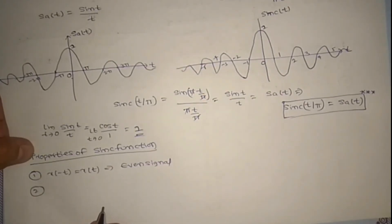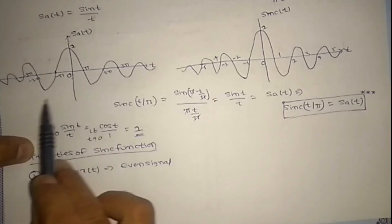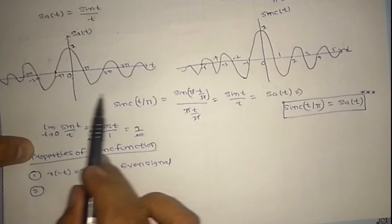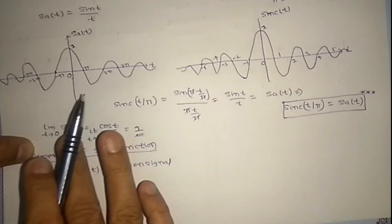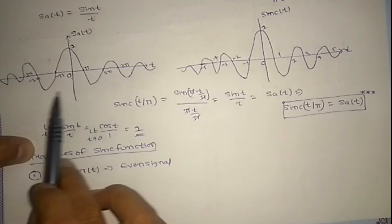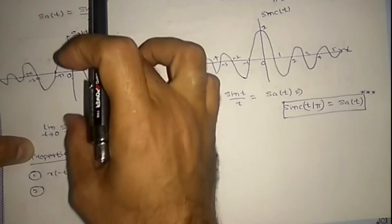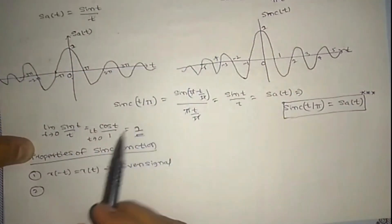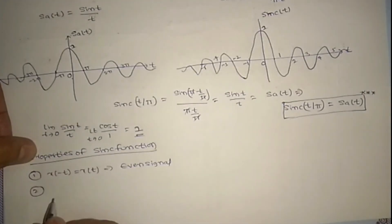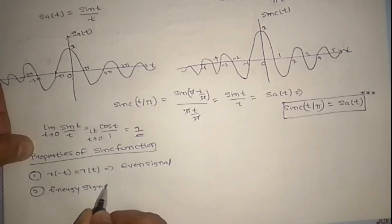So now is it an energy signal or power signal? At any t, we have infinity, no, right? It is neither energy nor power. So is it a power signal? Is it a periodic signal? No. Amplitude is keep on decreasing, so it is not a power signal. Next, remaining is it is an energy signal. So you can find what is the energy. Find out what is the energy of this sinc function. Thank you.